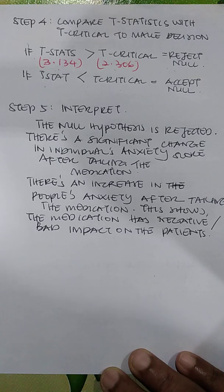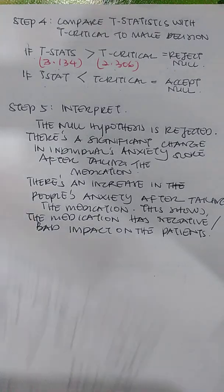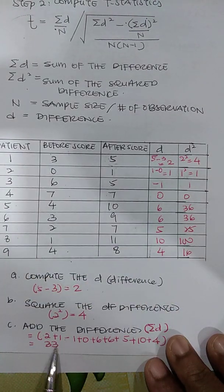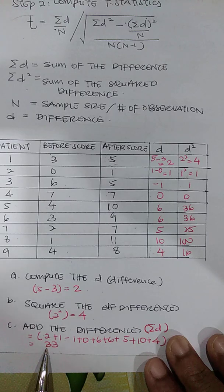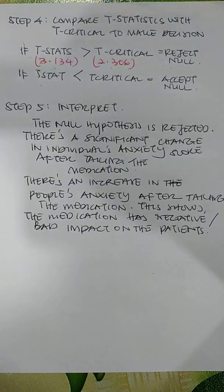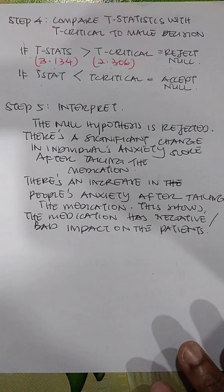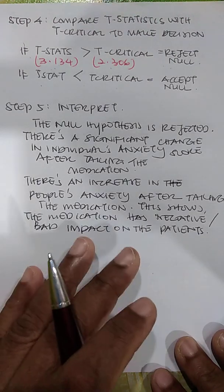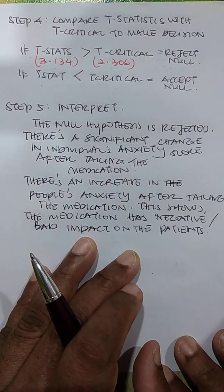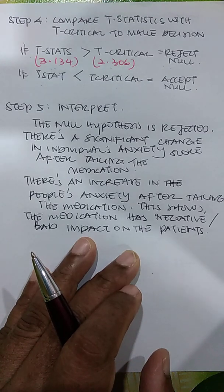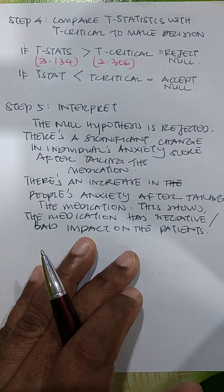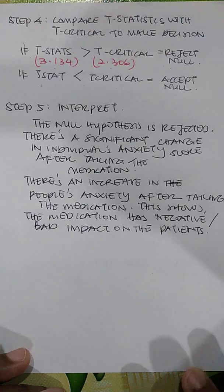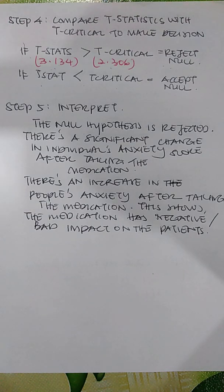When you take the average of the differences, it is positive — 33 — which tells us the second scores are higher than the first scores. So after taking the medication, the patients' anxiety levels actually increased. Since medication should reduce anxiety, an increase means the drug has a negative impact on patients and should be stopped. This is how you interpret and analyze the results.